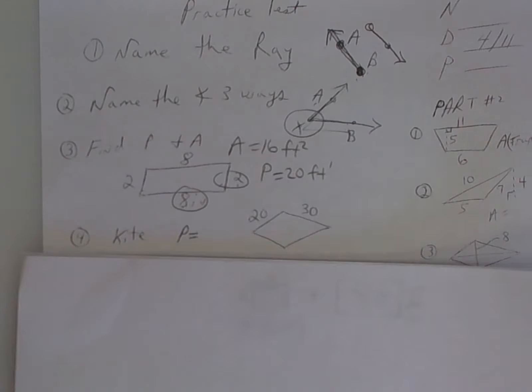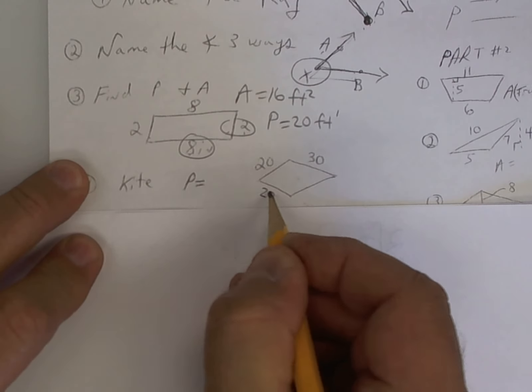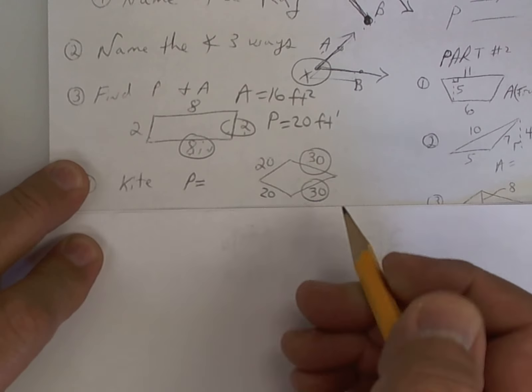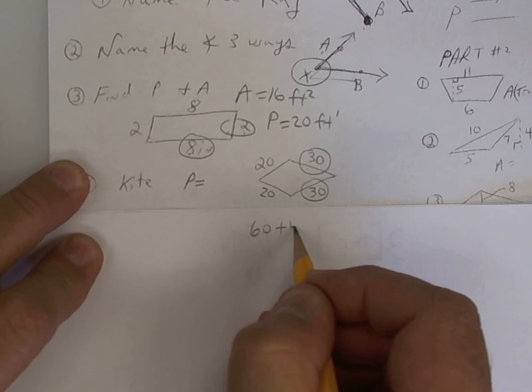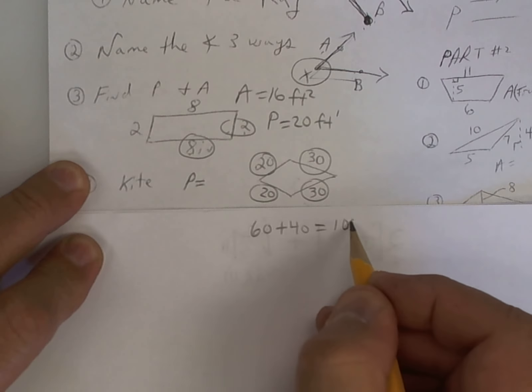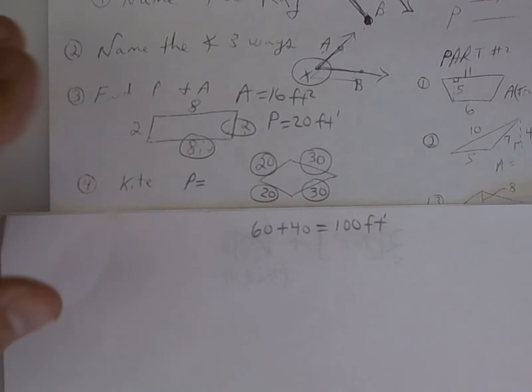Any questions on number three? Number four is a kite. This one wants the perimeter, however. So this is going to be 20. And this one's going to be 30. Perimeter, you're going to add it up. You get 60 plus 40. So you're going to put 100 feet is the perimeter. This is one dimension.